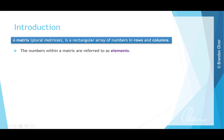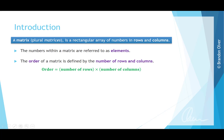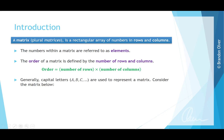The numbers within a matrix are referred to as elements. The order of a matrix is defined by the number of rows and the number of columns. The order can be expressed as the number of rows times the number of columns. It's important to note that you don't actually evaluate that multiplication — you just state it as rows times columns.